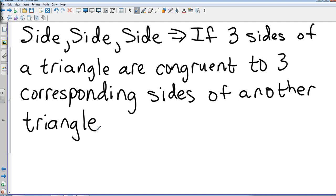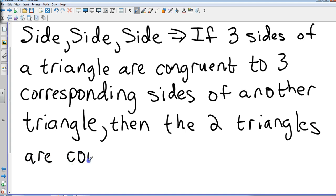Okay, there's my if statement, so guess what my then statement is? Then the two triangles are congruent. Yes, I'm serious. So, Side-Side-Side: if the three sides of a triangle are congruent to three sides of another triangle, then the two triangles are congruent. Okay, so what's it going to look like?